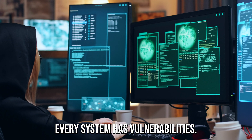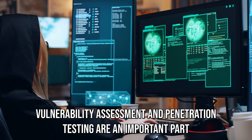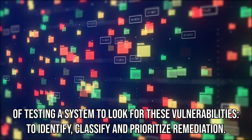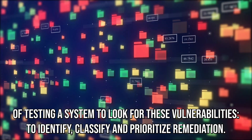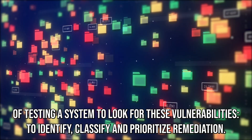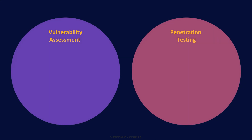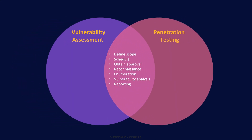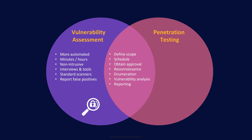Every system has vulnerabilities. Vulnerability assessment and penetration testing are an important part of testing a system to look for these vulnerabilities — to identify, classify, and prioritize remediation. Vulnerability assessments and penetration tests are very similar and start out exactly the same way: identifying potential vulnerabilities and reporting on them to understand the potential impact on the organization and prioritize remediation. In a vulnerability assessment, once a potential vulnerability has been identified, we skip straight to reporting.